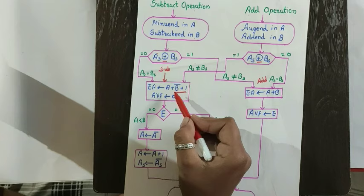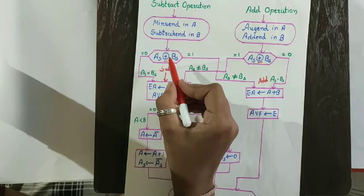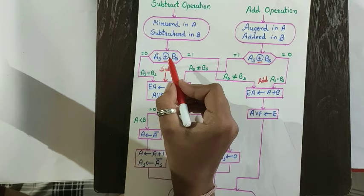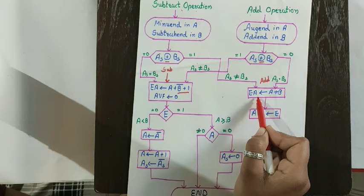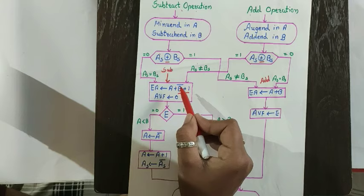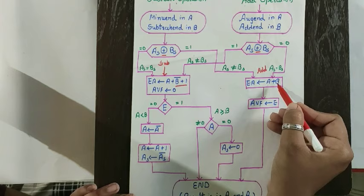Now if both signs are different, AS and BS — AS can be plus and BS minus, or AS minus and BS plus — the XOR will result in 1. That means instead of the subtraction operation, you have to perform the addition operation, so we directly redirect to the addition path. Similarly, in addition, if both signs are different, we redirect to the subtraction operation. After addition is performed, we store the overflow in AVF and we are done with the addition path.